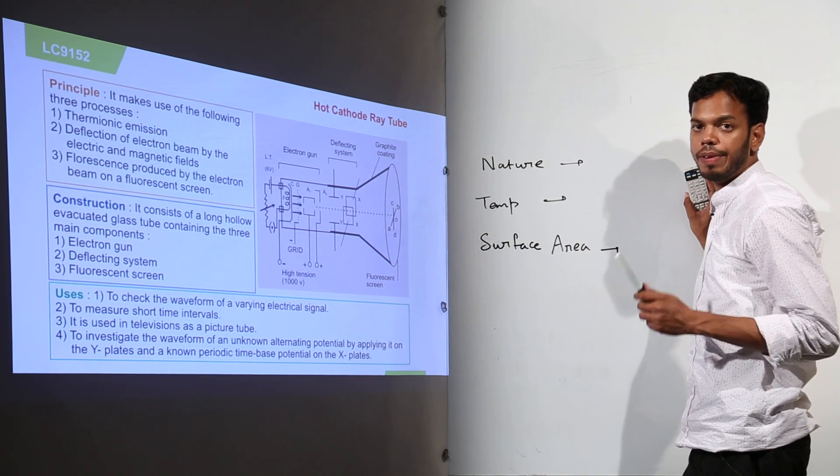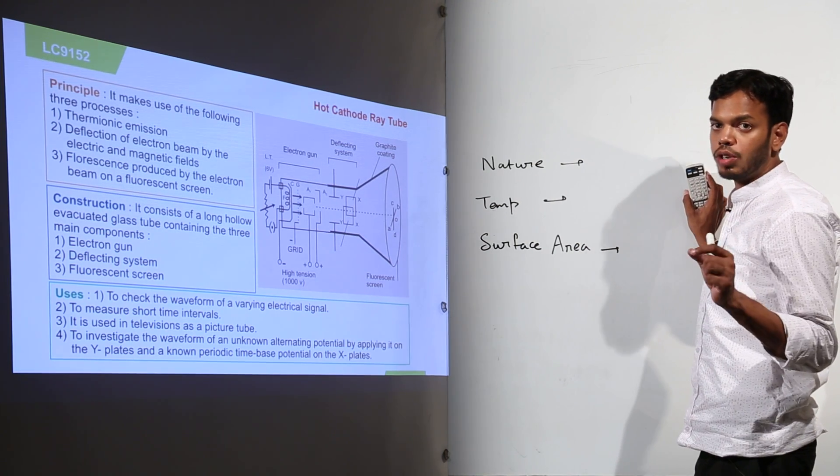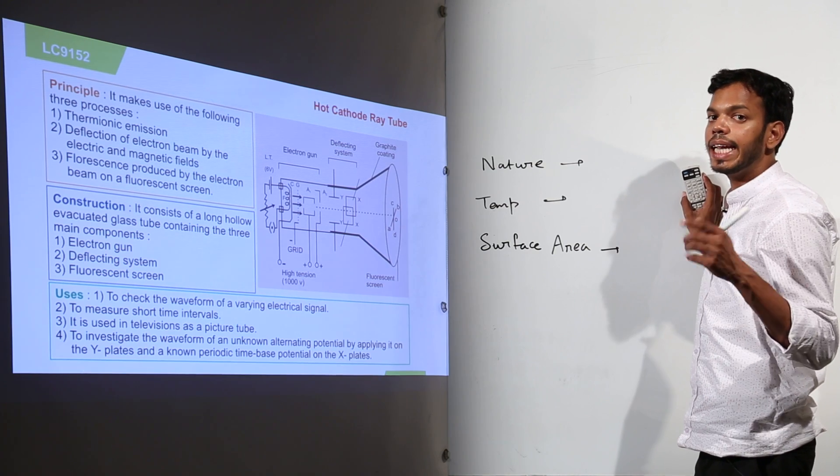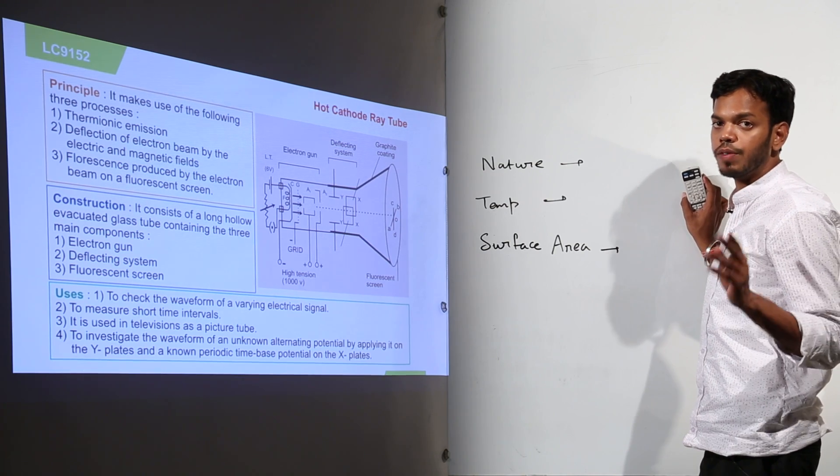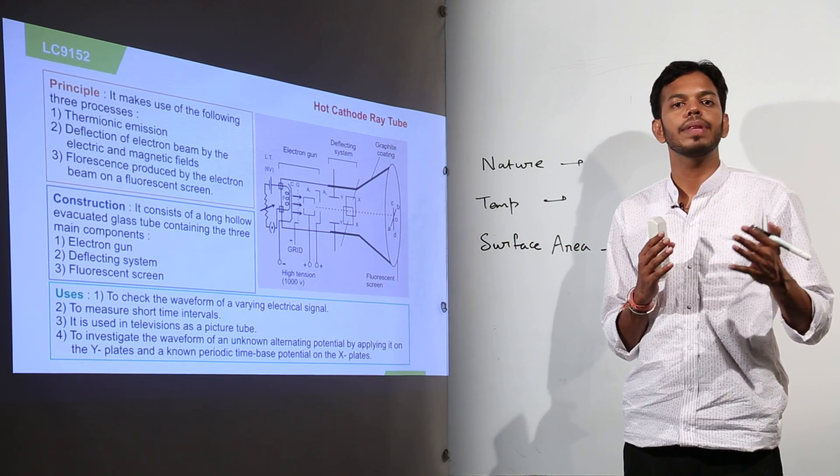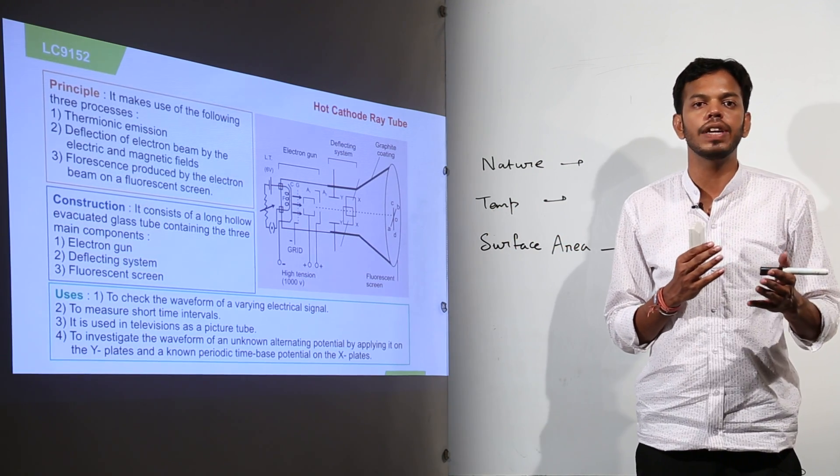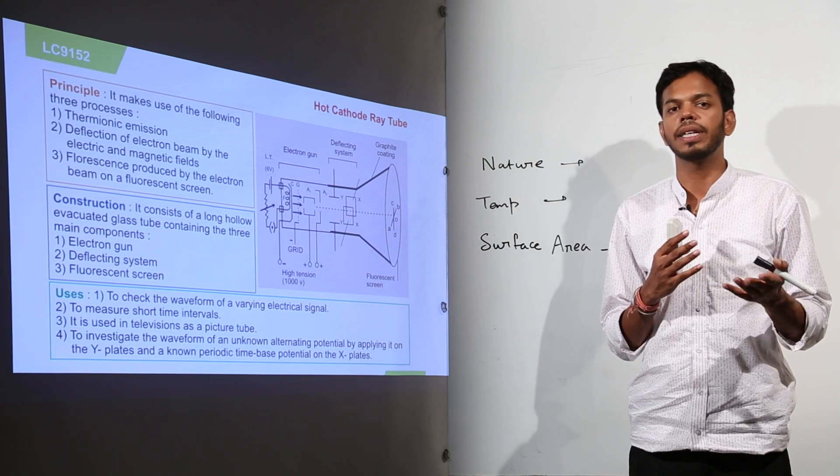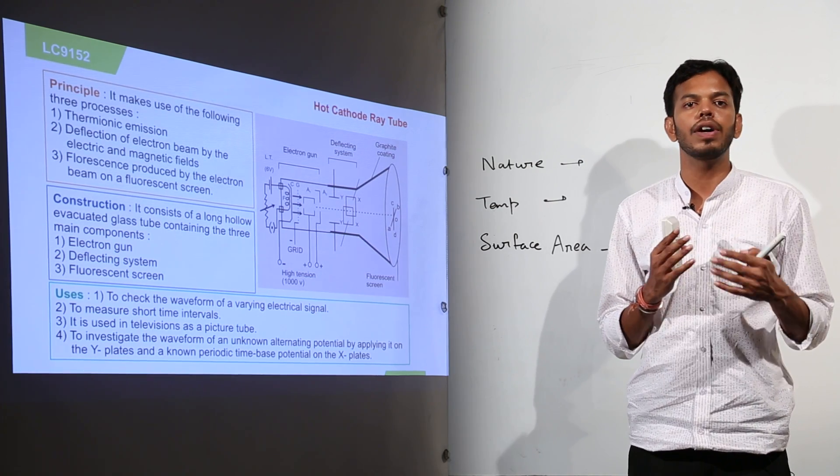These are the factors. First of all, the nature of metal. Not every particular metal is capable of emitting electrons at the same particular temperature. I just gave you a sheet that cesium requires very less amount of energy whereas tungsten required huge amount of energy.